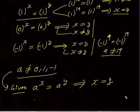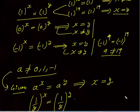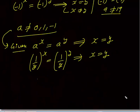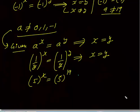For example, (1/2)^x = (1/2)^y — in this case you can always say x = y. Similarly, 5^x = 5^19 means x = 19, because the base 5 is not equal to zero, one, or minus one.